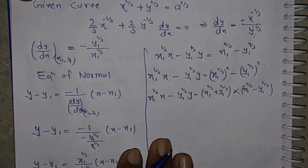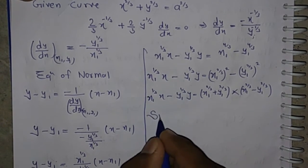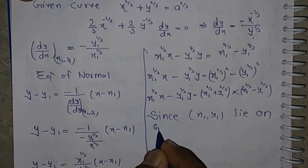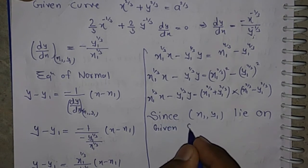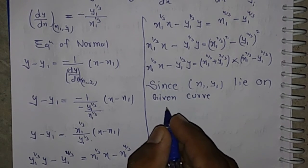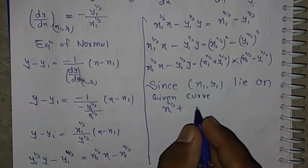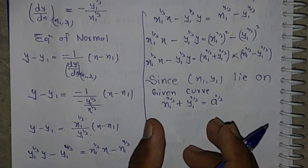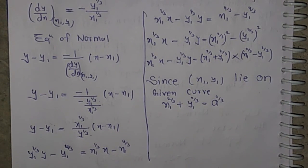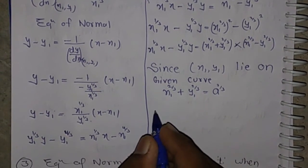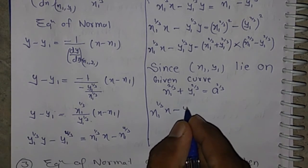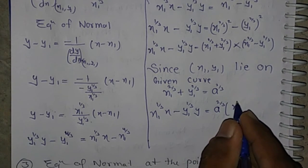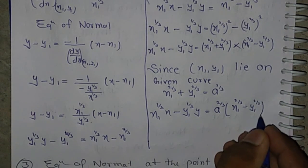Since the point (x1, y1) lies on the given curve, we have x1^(2/3) + y1^(2/3) = a^(2/3). Substituting this into the equation of the normal: x1^(1/3)*x - y1^(1/3)*y = a^(2/3) * (x1^(2/3) - y1^(2/3)), and this is our final answer.